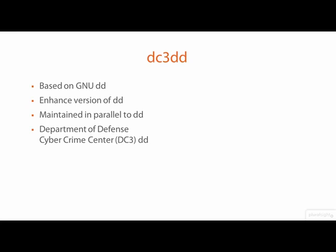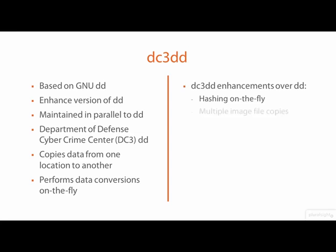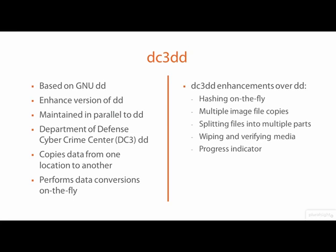DC3DD operates under the same idea as DD in that it copies data from one location to another and performs data conversions and reformatting as specified. DC3DD expands on the capabilities of DD with the ability to perform hashing as data is being acquired, saving acquired images into multiple files, splitting acquired images into multiple files, wiping and verifying media, and displaying an in-process progress indicator. The current version of DC3DD is very recent and well maintained.